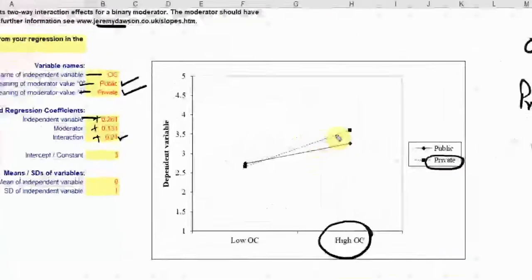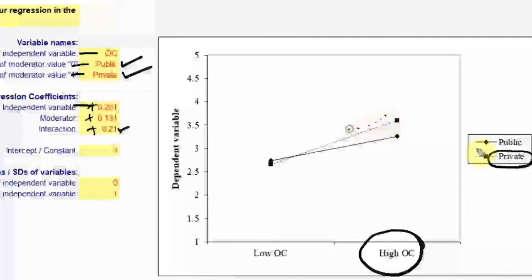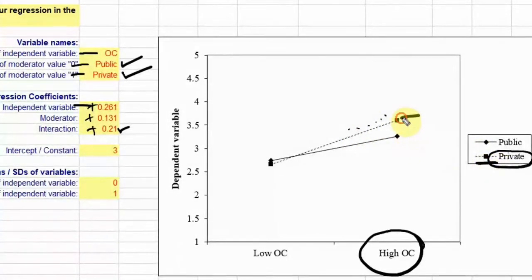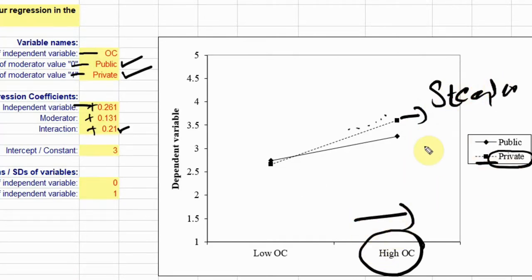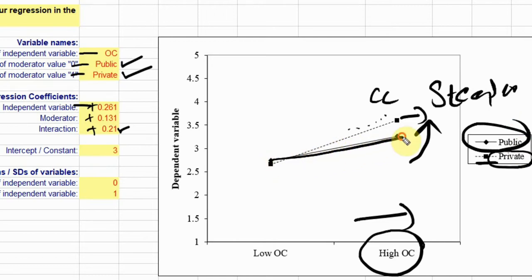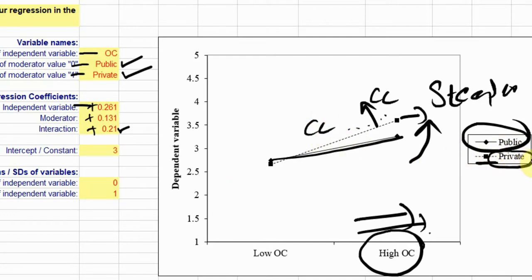The dotted lines showing private sector banks have a much steeper gradient. So in private sector banks, if you increase organizational commitment there is a stronger change in collaborative culture. However, for public sector banks the gradient is much straighter — although increasing organizational commitment does lead to an increase in collaborative culture, it is not as strong as in private sector banks.